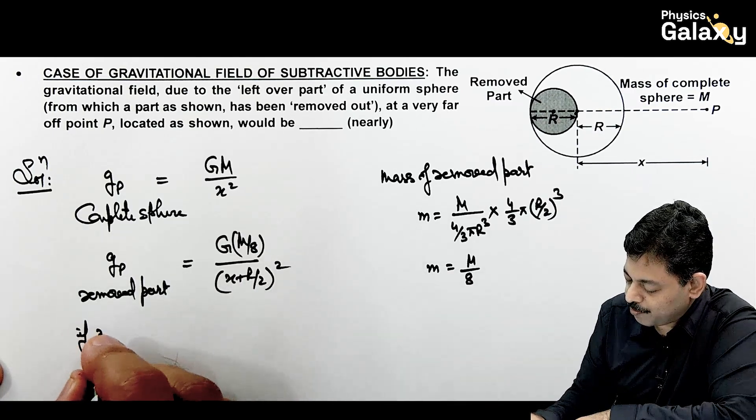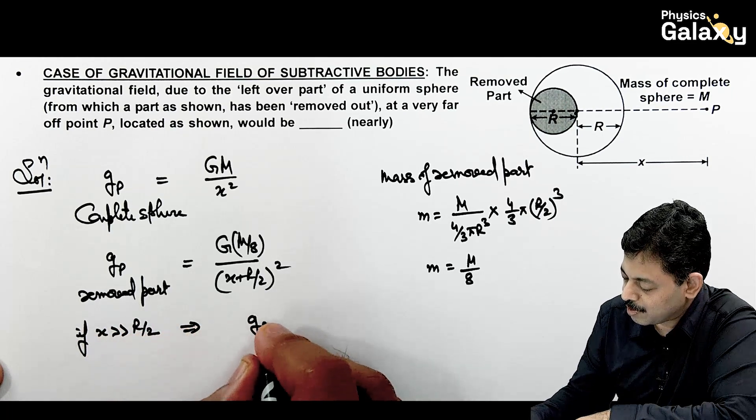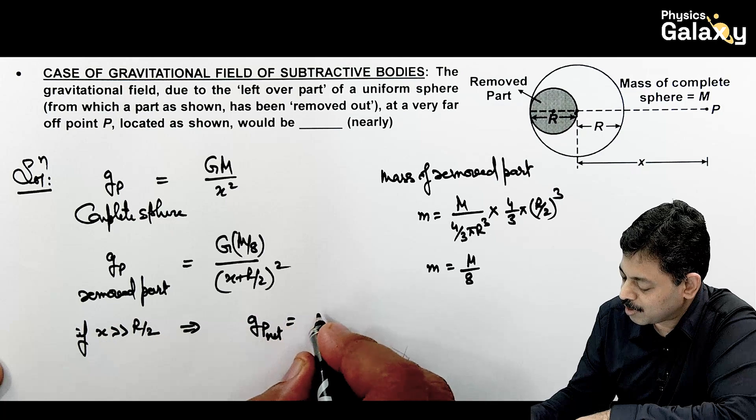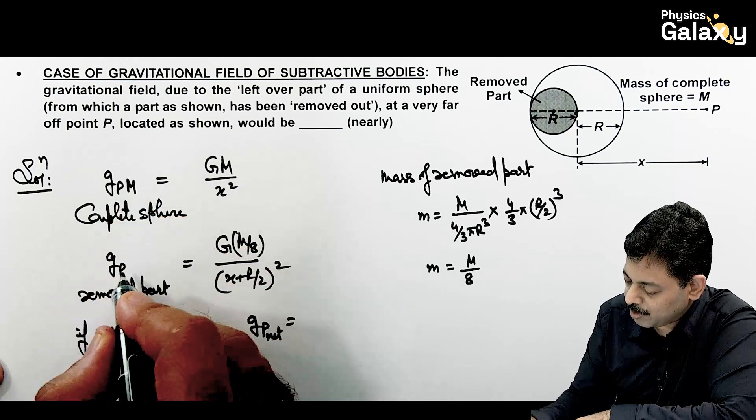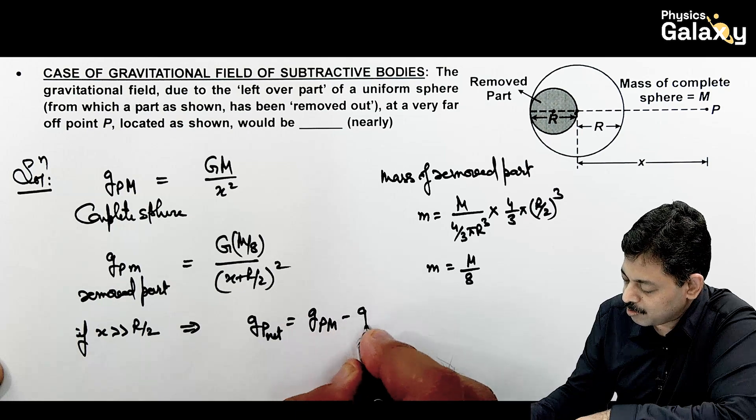In that case, if the value of X is very large compared to R by 2, this implies net gravitational field at point P can be written as this g_p due to capital M minus g_p due to small m.